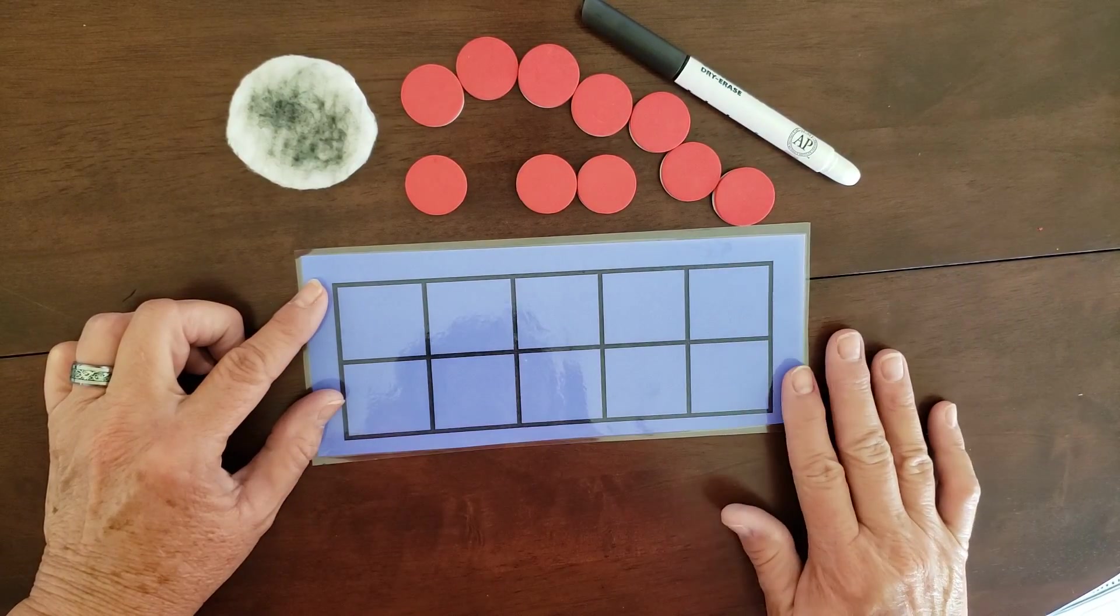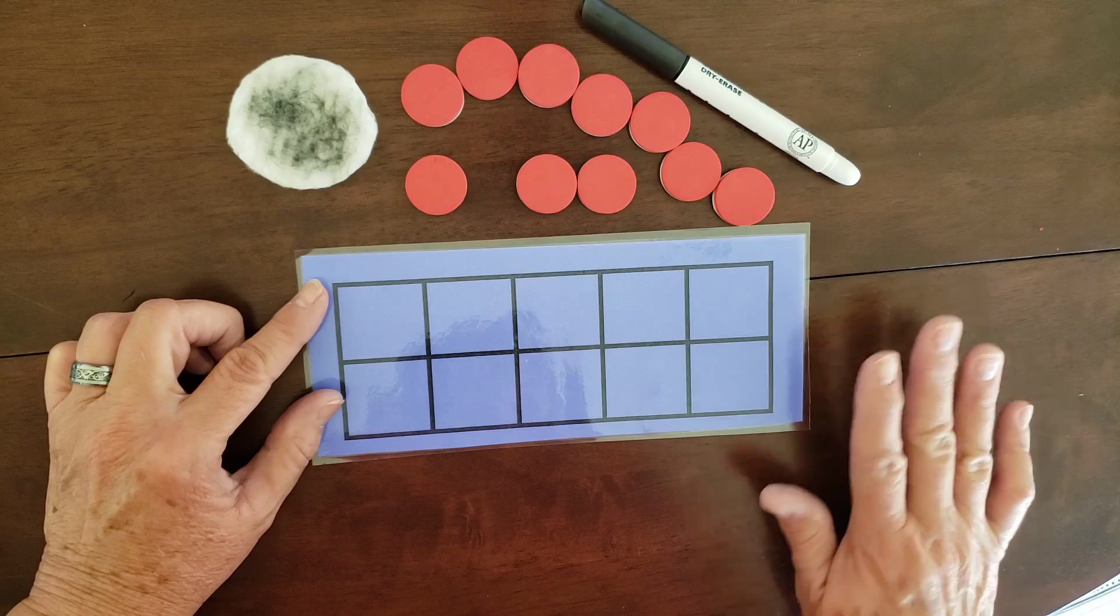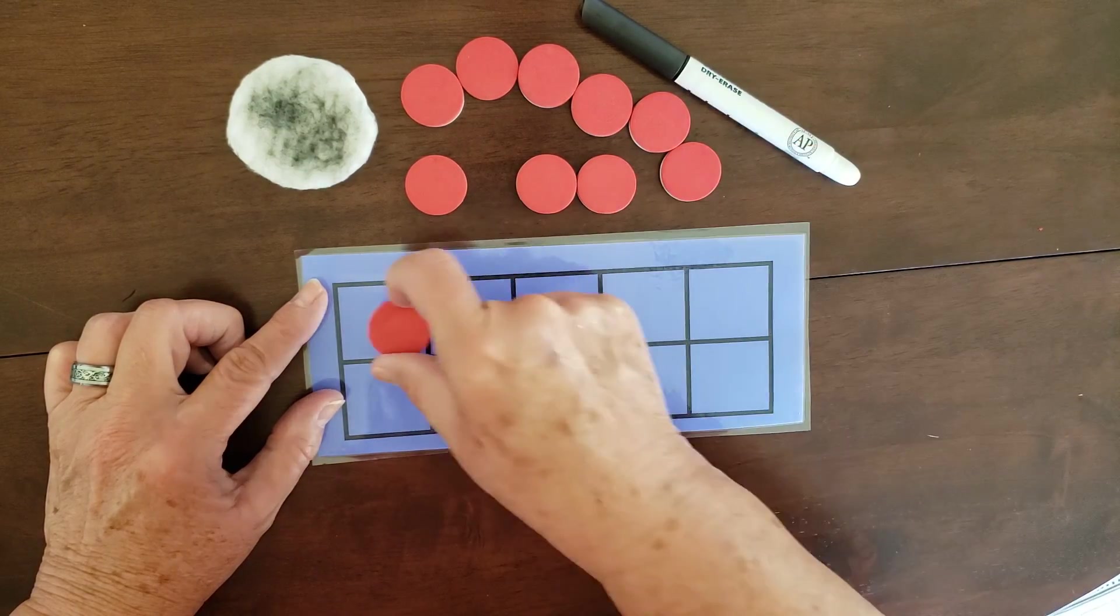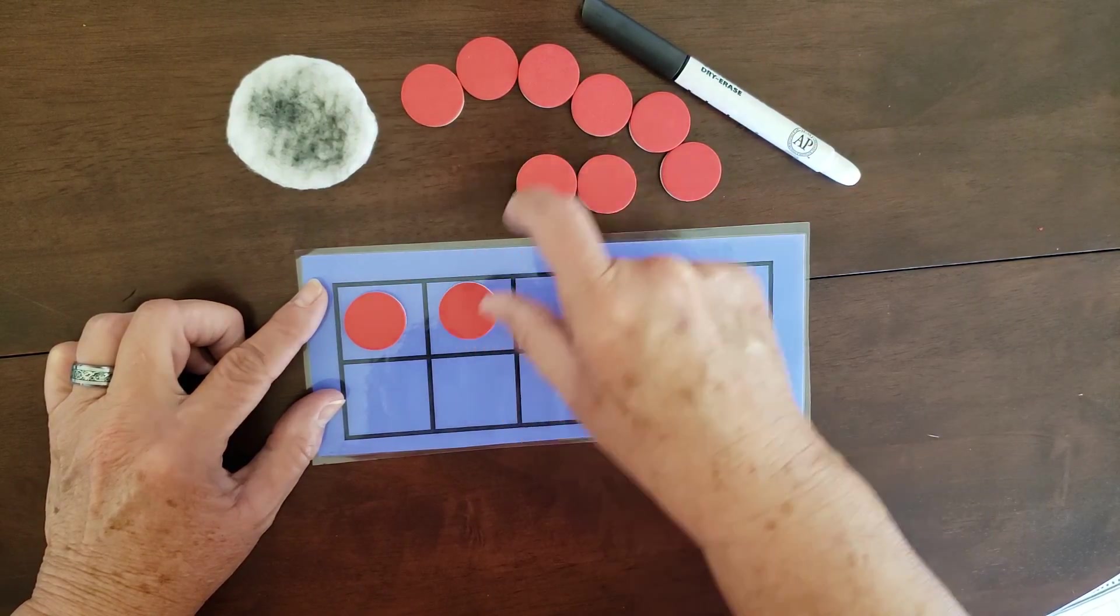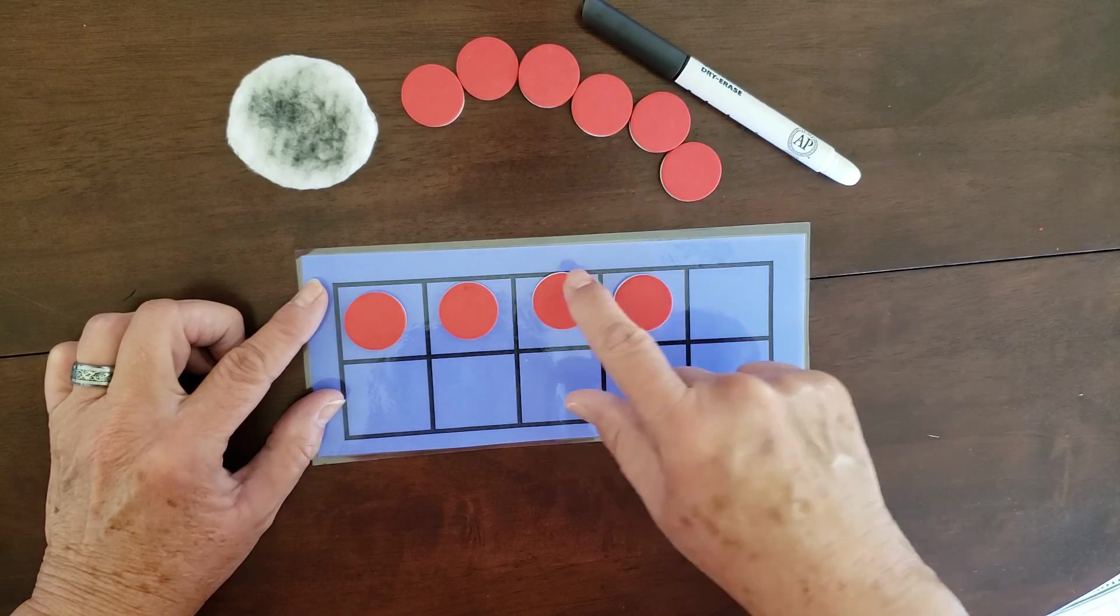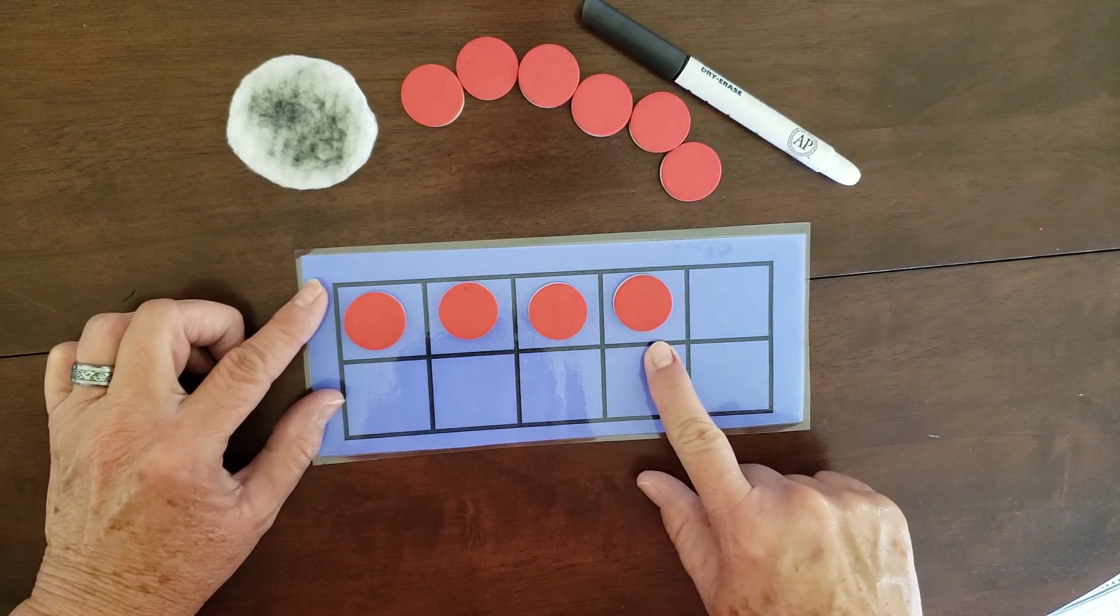So if I say something like, can you show me 4 in your 10 frame? So one at a time, you're going to go 1, 2, 3, 4. And there you have 4.